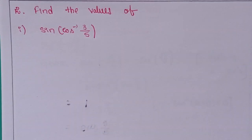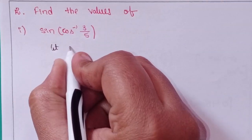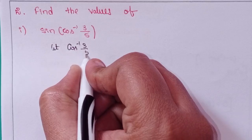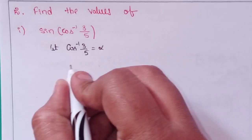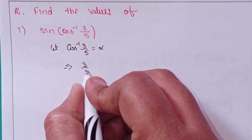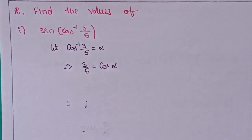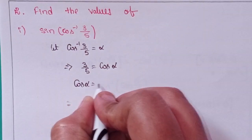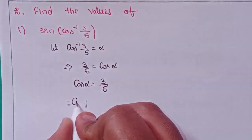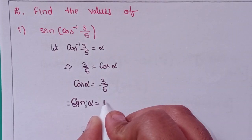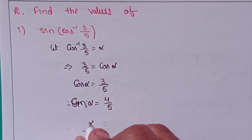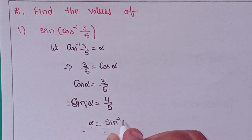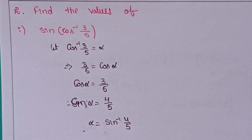Let cos inverse 3 by 5 equal to alpha. That means 3 by 5 equals cos alpha. So cos alpha equals 3 by 5. Automatically, sin alpha equals 4 by 5, which means alpha equals sin inverse 4 by 5.